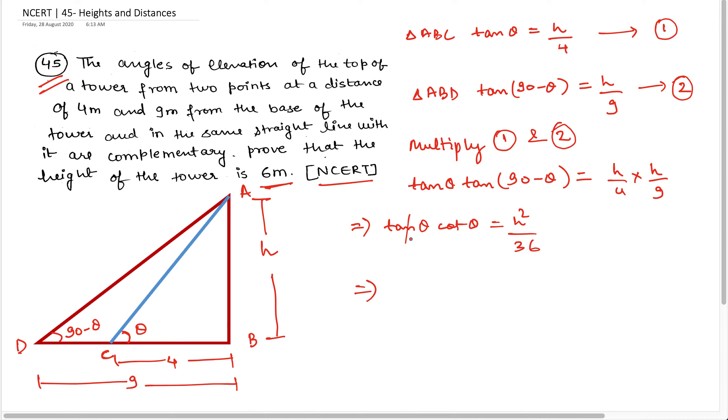Now look, tan theta and cot theta will cancel. So h square upon 36 is equal to 1. Here we get h square is equal to 36, and if I take the square root of both sides, h will be equal to 6. So we have proved that the height of the tower is 6 meter.